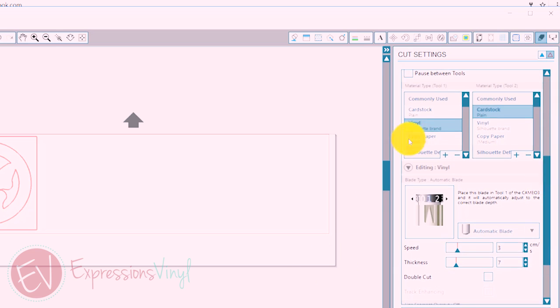So since we don't want to use that default setting, we want to create our own setting that we can just refer to every time we need to cut reflective. This little plus and minus right here is how you can set those. So let's hit our plus, and we are going to name this EV reflective.